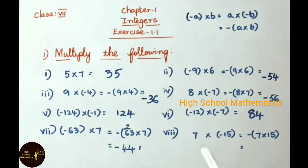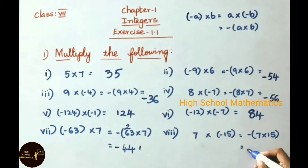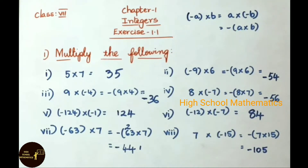See now the eighth sum: 7 into minus 15, that equals to minus of 7 into 15. So 7 fifteens are 105. Write down minus 105. So the answer is minus 105.